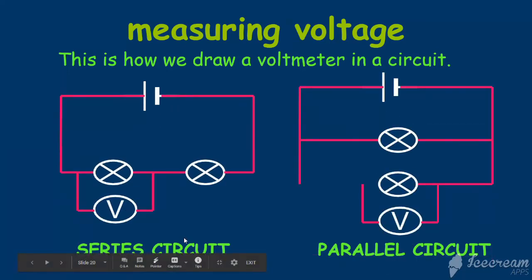What happens in a series circuit? If we want to measure the voltage or the potential difference that this bulb has, then we have to connect the voltmeter like this, in parallel with the lamp.